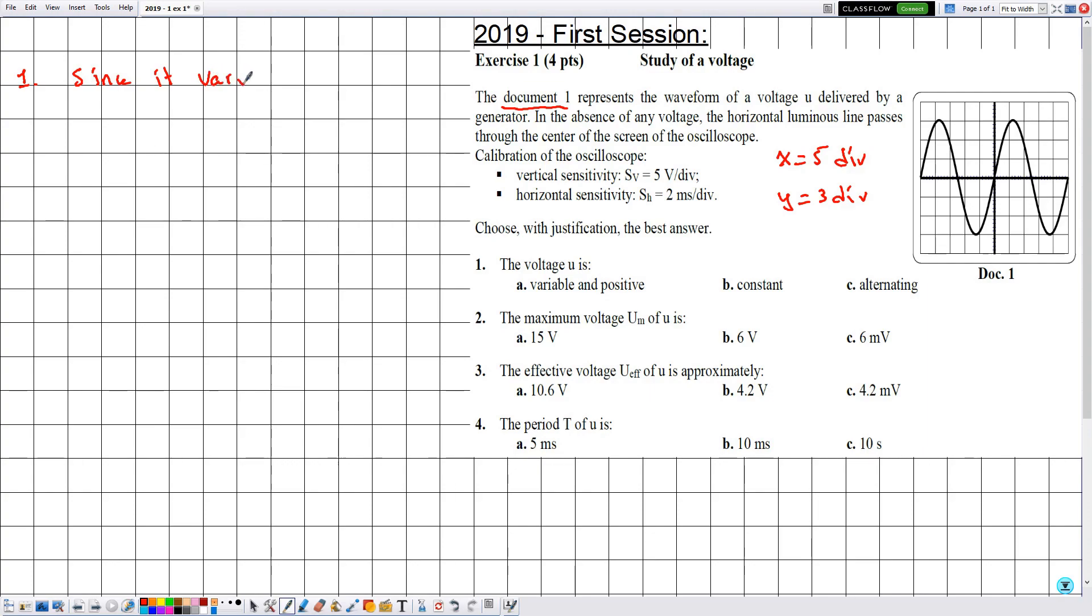Since it varies with time and alternately positive and negative, and the shape is given by sinusoidal, then it is an AC sinusoidal voltage source.